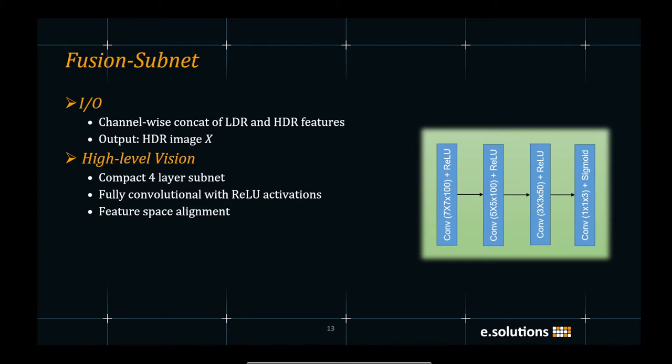The input to the fusion subnet is the channel-wise concatenation of the low dynamic range and high dynamic range features from the domain conversion module. This subnet produces an output HDR image X. The fusion subnet is a compact four-layer architecture as shown in the figure. It involves fully convolutional layers with ReLU activation. This subnet has the ability to perform alignment of exposures in the feature space.